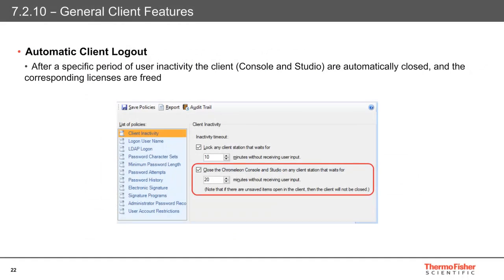In the administration console, the existing user database policy to manage automatic locking of client PCs after a period of inactivity has been enhanced to allow the system to automatically close the studio and console of a client PC. Closing the client will also free the user licenses that were being consumed by that client, which will boost continuity if a user has left themselves inadvertently logged on for long periods of time. To avoid the loss of any changes that have been made, if there are any unsaved items opened in the client, then the client will not be closed.